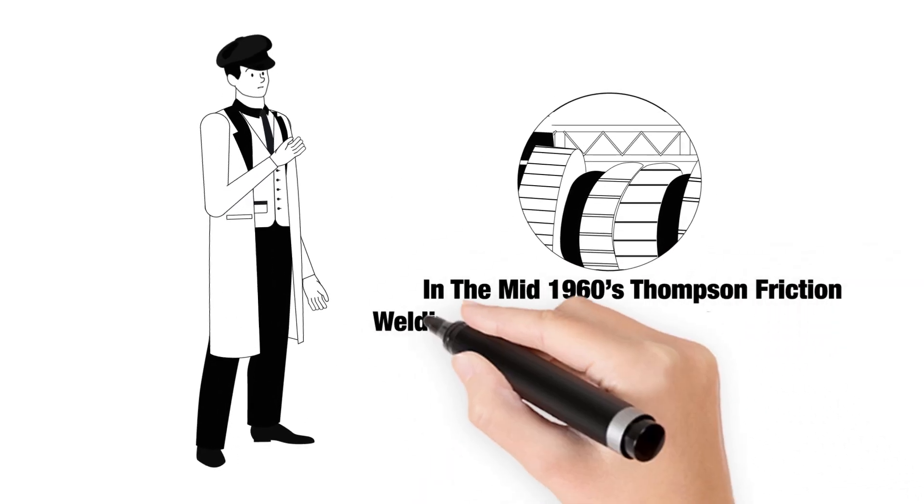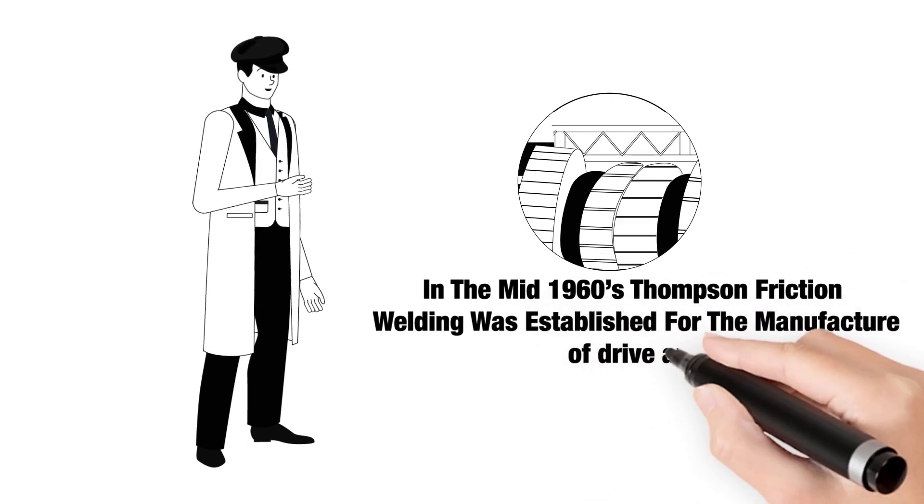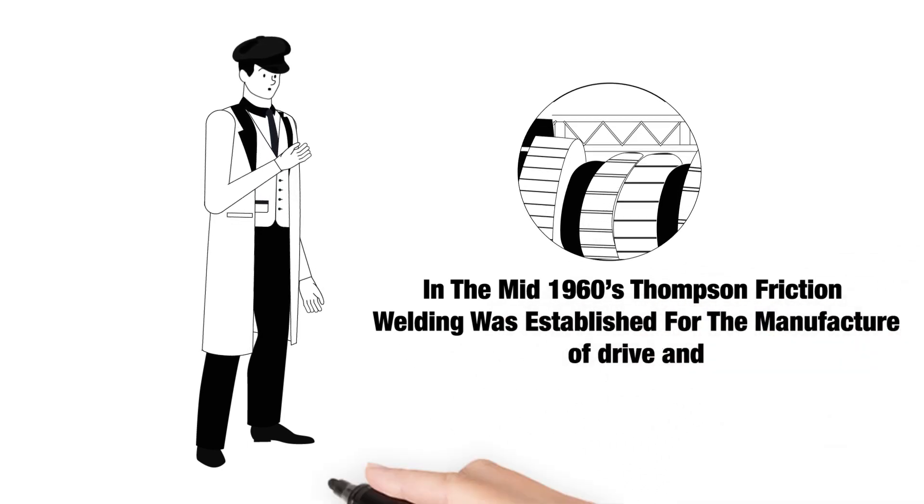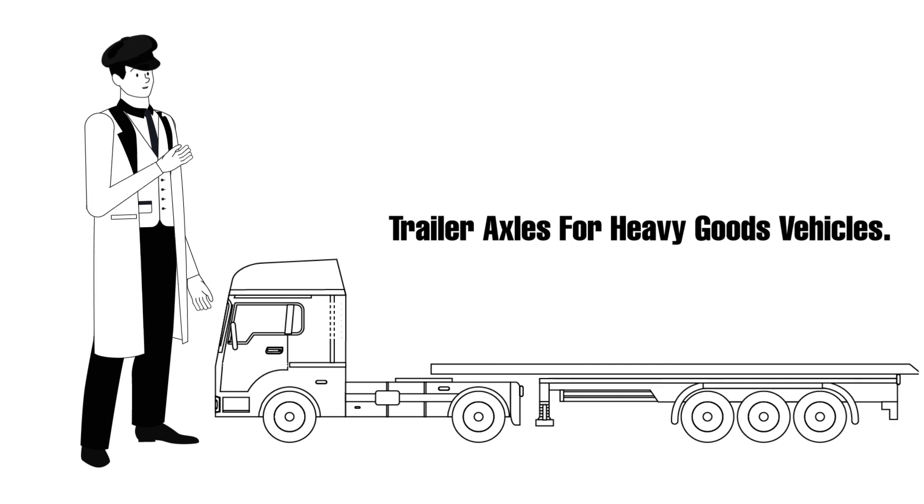In the mid 1960s, Thomson's friction welding was established for the manufacture of drive and trailer axles for heavy goods vehicles.